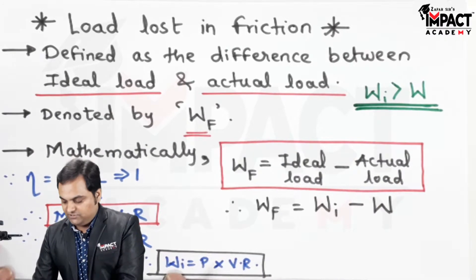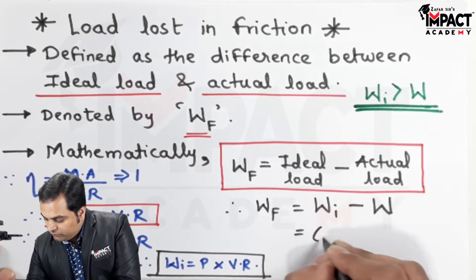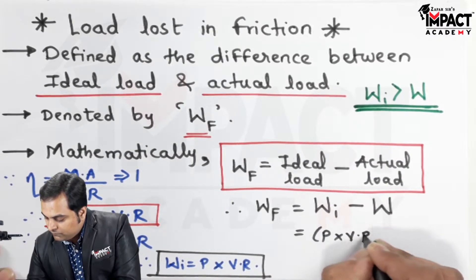So I will just put this value of W_I over here. So it is P into VR.